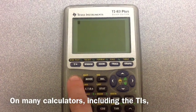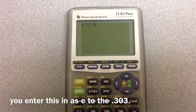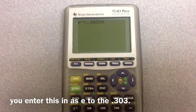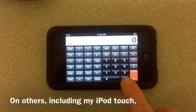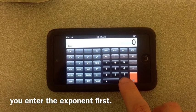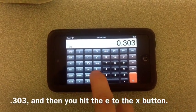On many calculators, including the TI's, you enter this in as e to the .303. On others, including my iPod touch, you enter the exponent first, .303, and then hit the e to the x button.